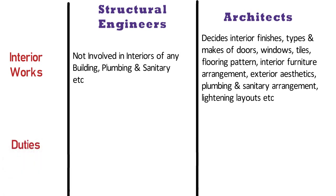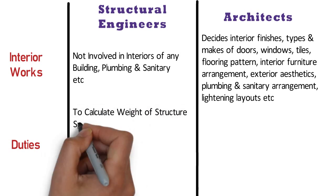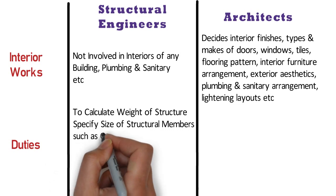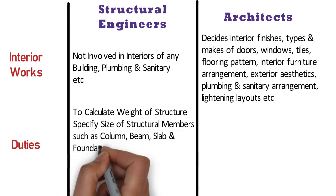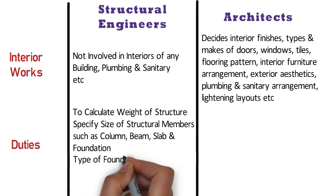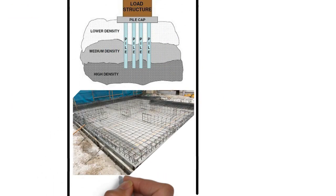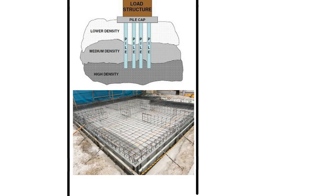Duties: The main role of a structural engineer is to calculate the weight of the structure and specify the size of structural members such as columns, beams, slabs, foundations and other supporting elements of the building. The structural engineer decides what type of foundation has to be used, whether it is pile foundation, mat foundation, its width, depth, etc. The structural engineer also designs the reinforcement steel to be used in all structural members like column, beam, slab and foundation.